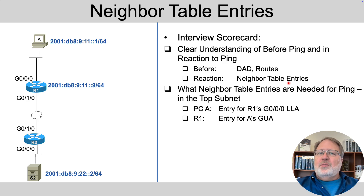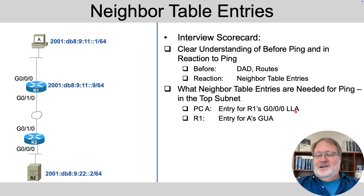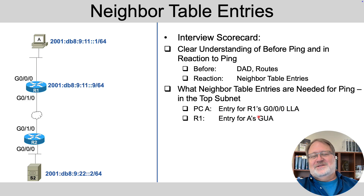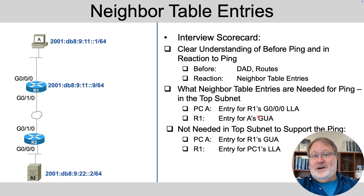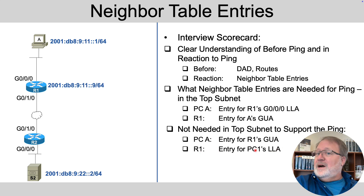What neighbor table entries are needed to support that ping? It can be a little surprising. PCA needs an entry for router R1's LLA — not its GUA. But R1 needs an entry for host A's global unicast address. The reverse are not needed: A does not need a neighbor table entry for R1's GUA, and R1 does not need an entry for PC1's LLA to support the ping — it might for other reasons, but not to support the ping.